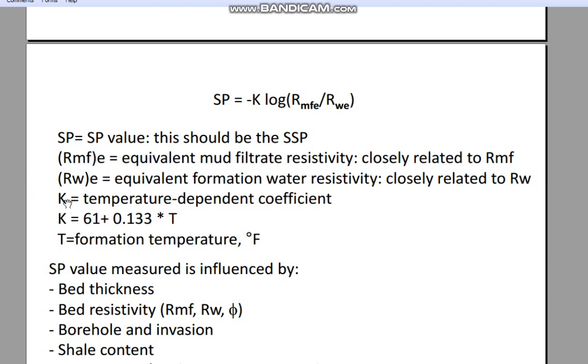K is the Temperature Dependent Coefficient - a coefficient that depends on temperature. K equals 61 plus 0.133 times T, where T is Formation Temperature in Fahrenheit.